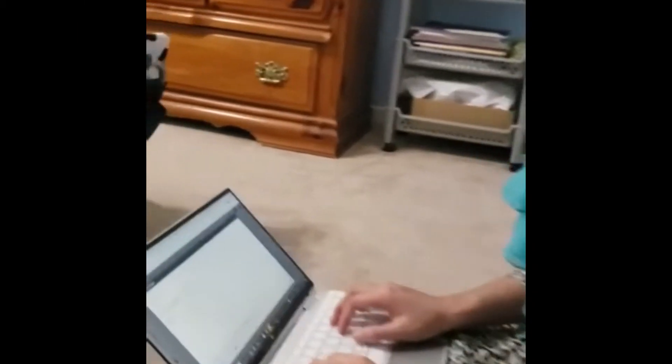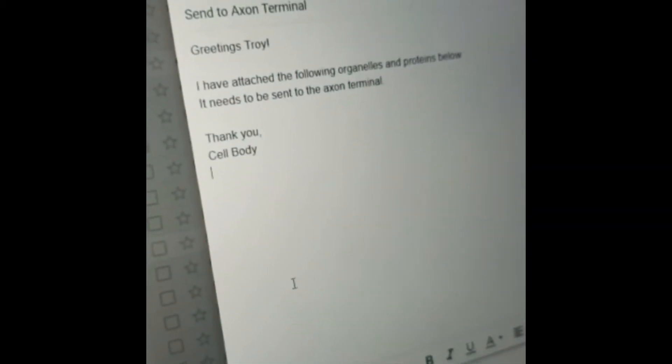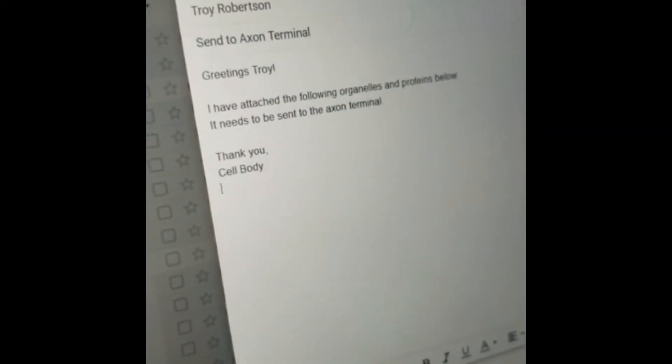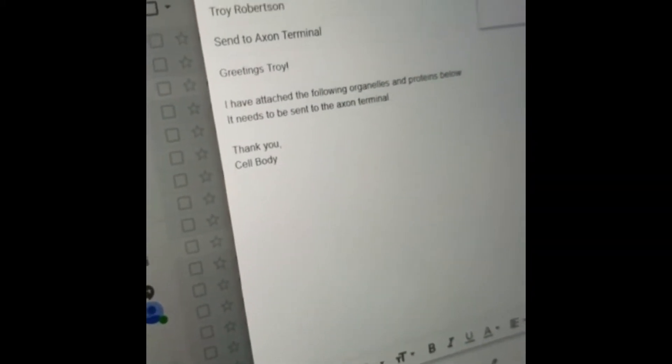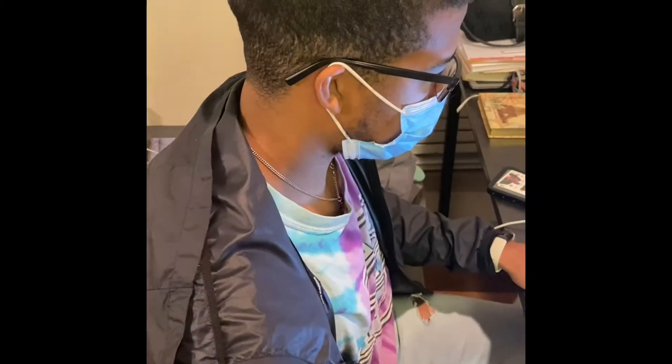Here we have an anterograde transport, which is when the cell body sends material to the axon. In this reenactment, Sahara is playing the role of the cell body, sending organelles and proteins down the axon to the axon terminal.